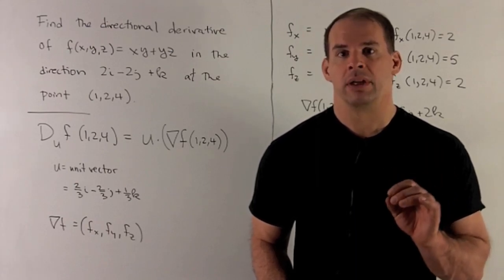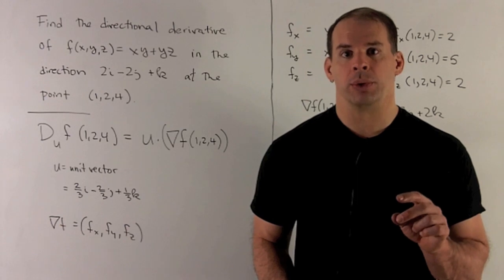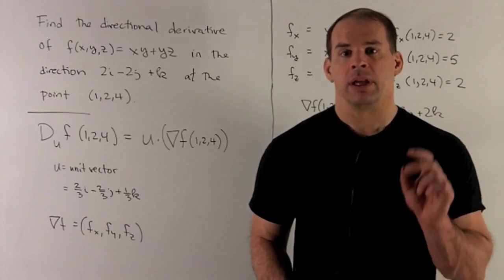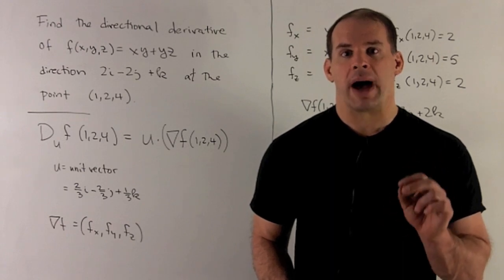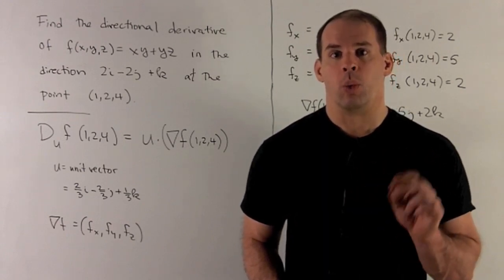Find the directional derivative of the function f of x, y, z equal to xy plus yz in the direction 2i minus 2j plus k at the point (1, 2, 4).